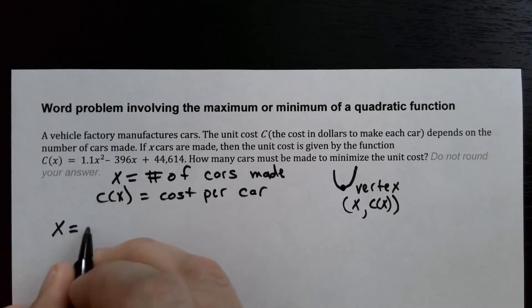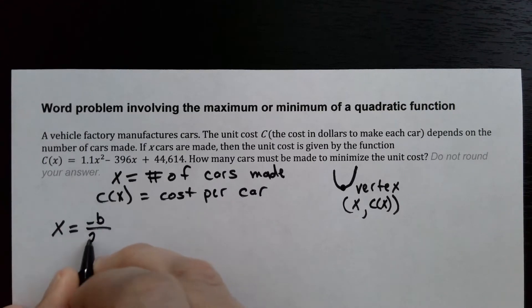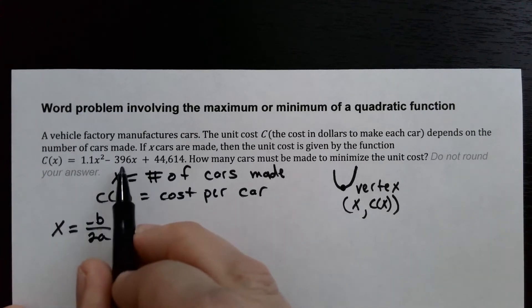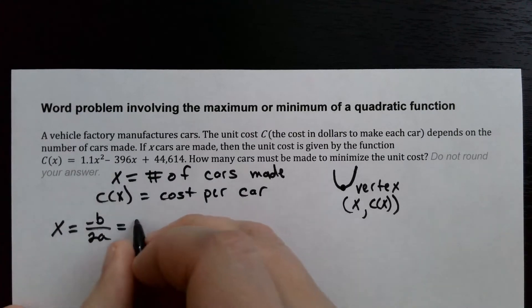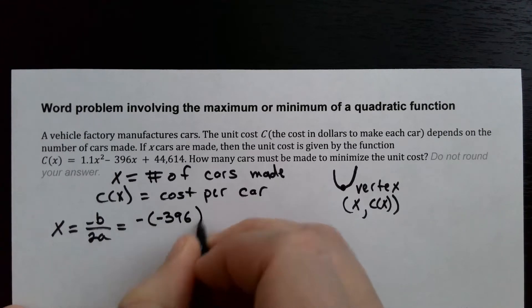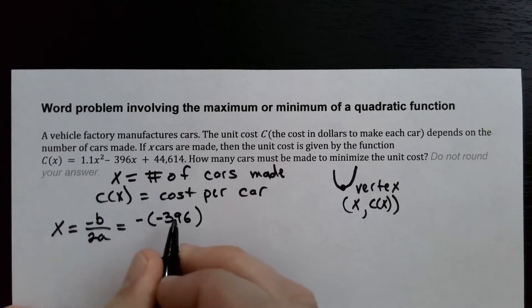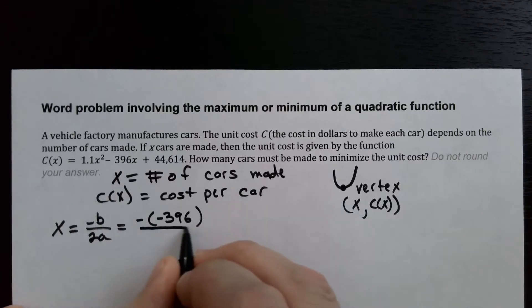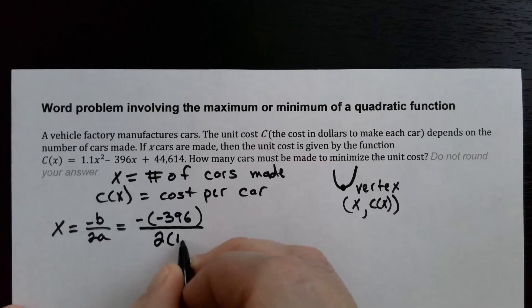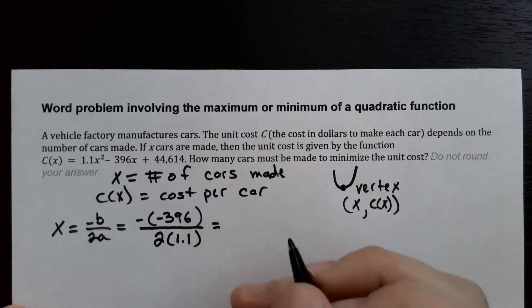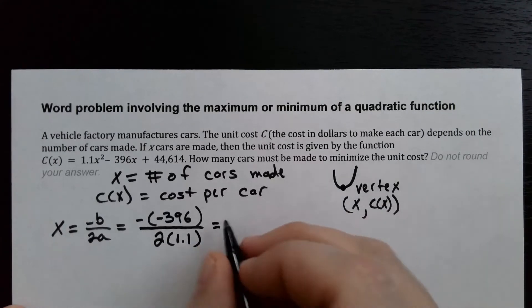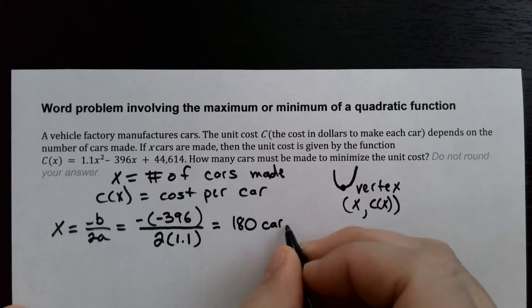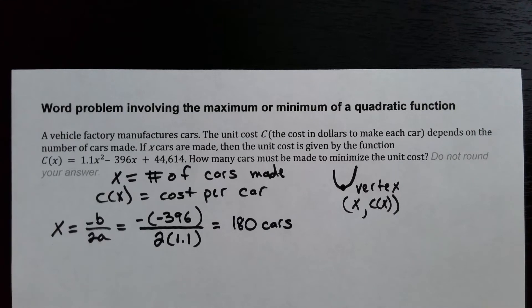To find the vertex we use X equals negative B over 2A. The B value is negative 396, so we get negative of negative 396, divided by 2 times A which is 1.1. If we solve that out we get 180, so 180 cars must be made to minimize the unit cost.